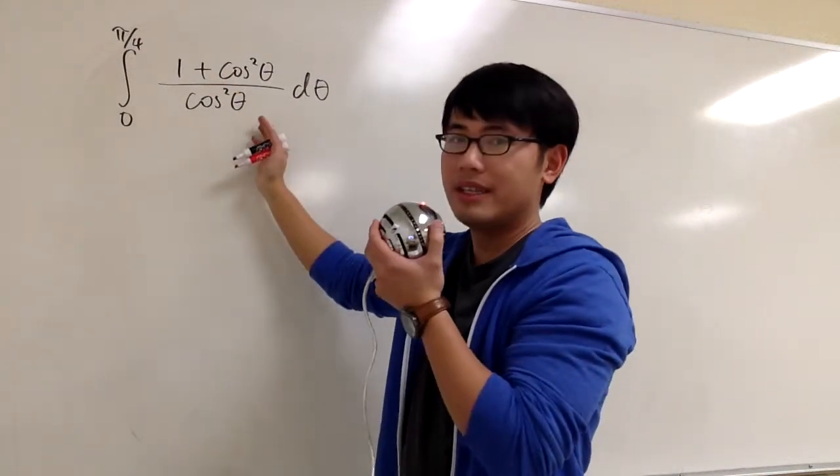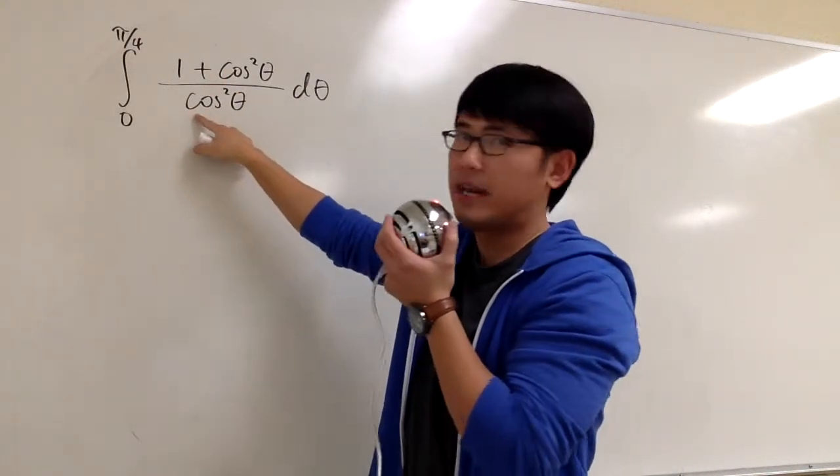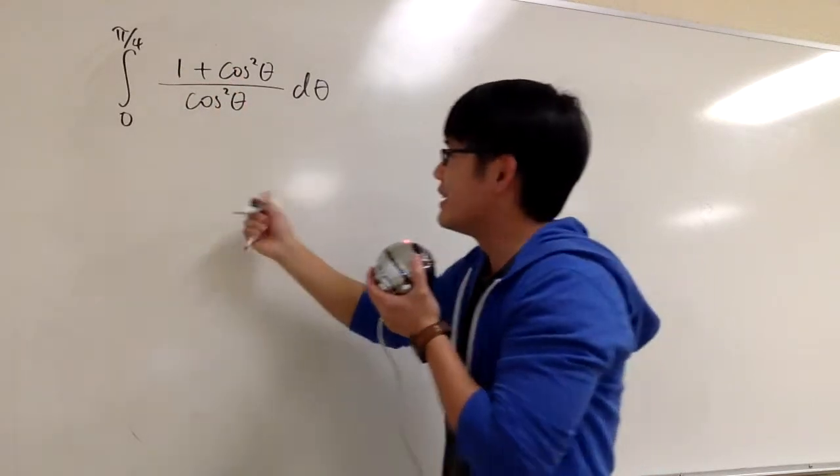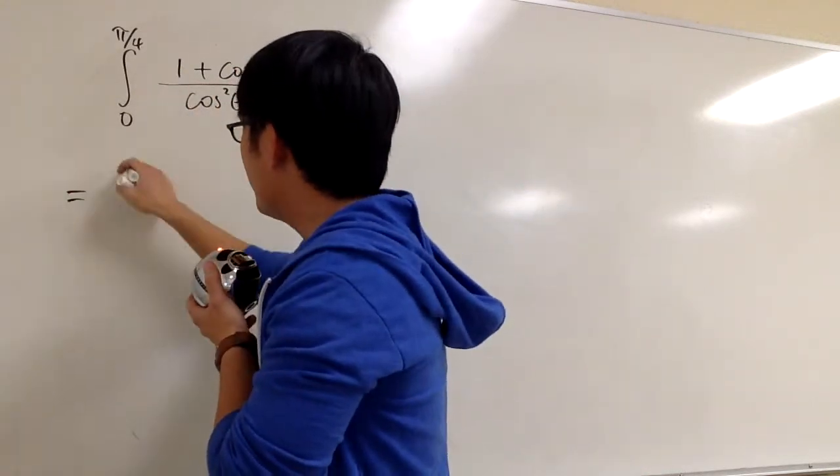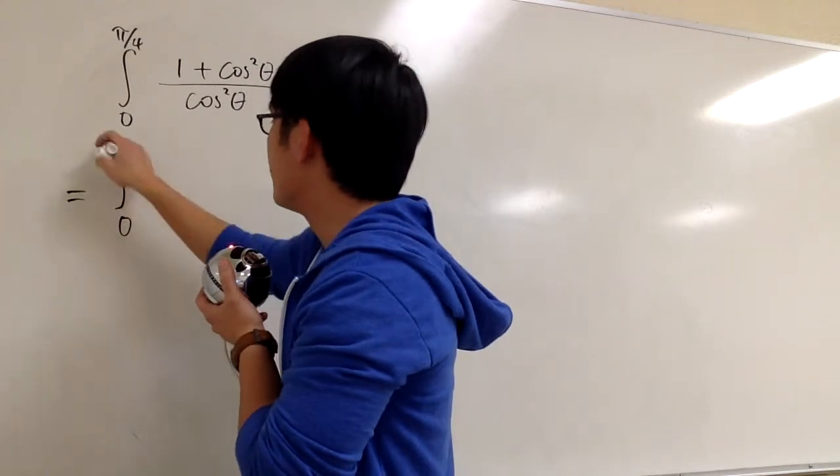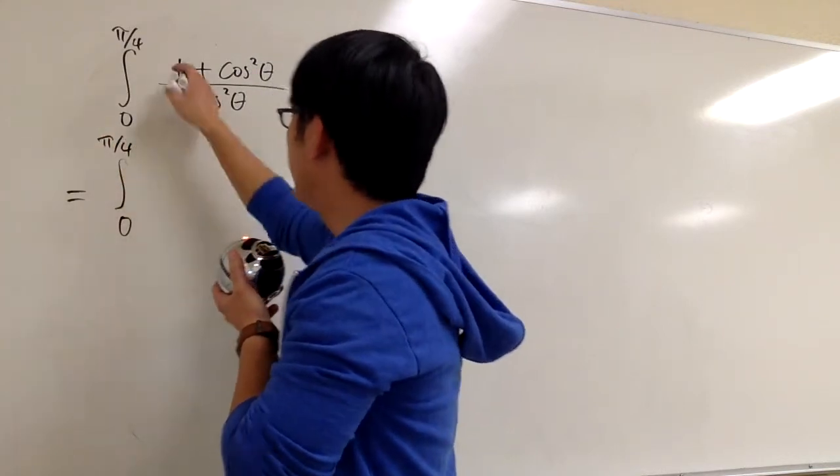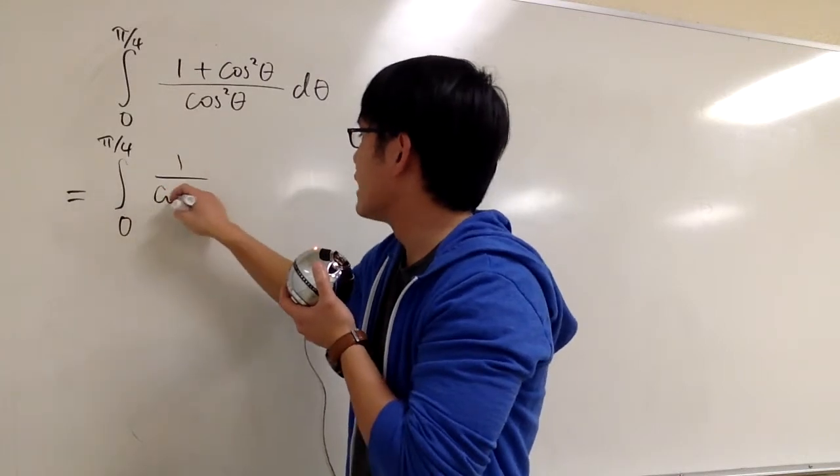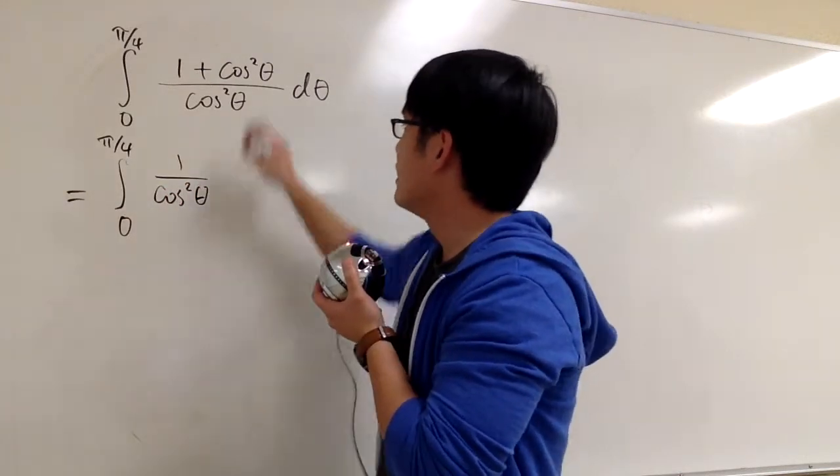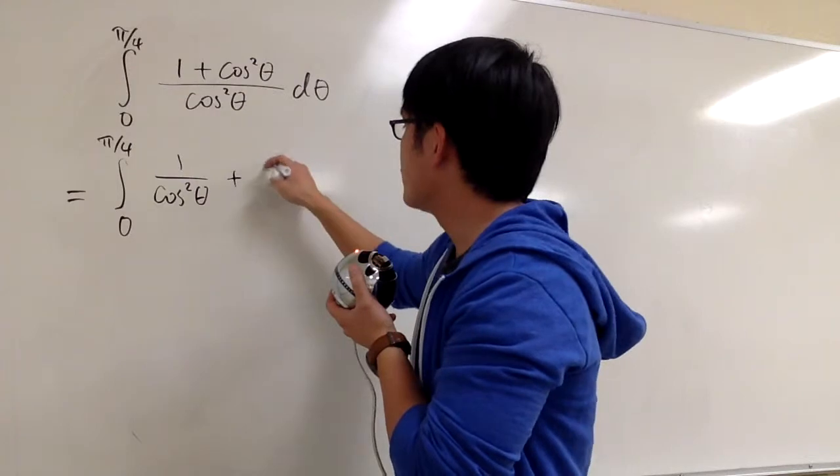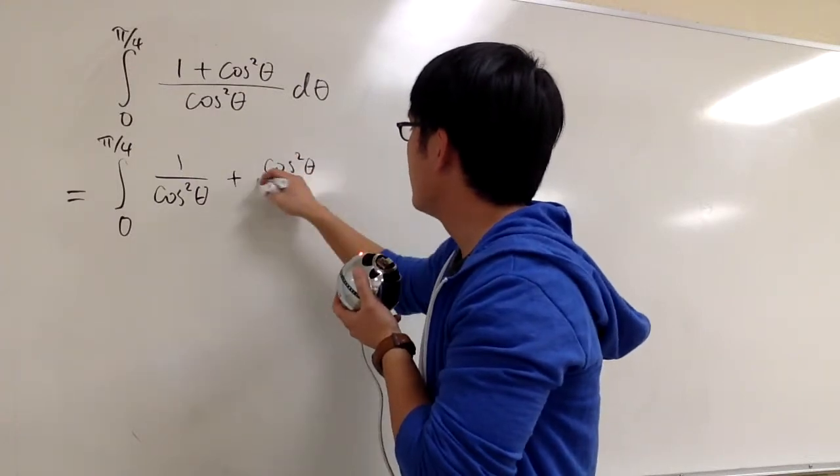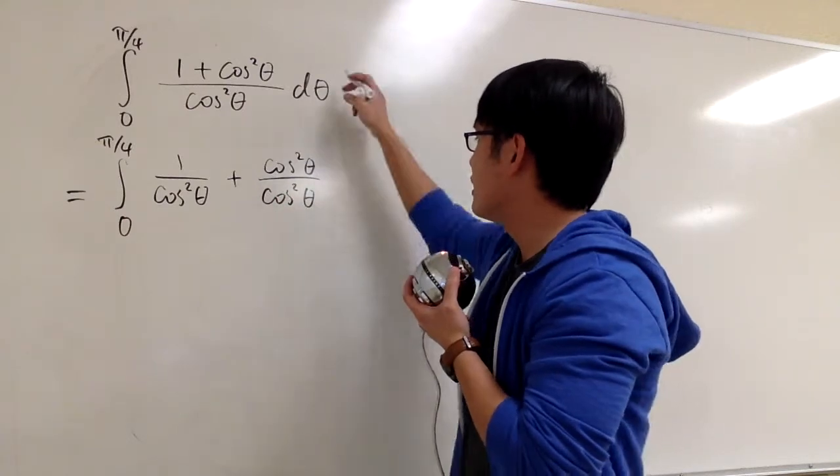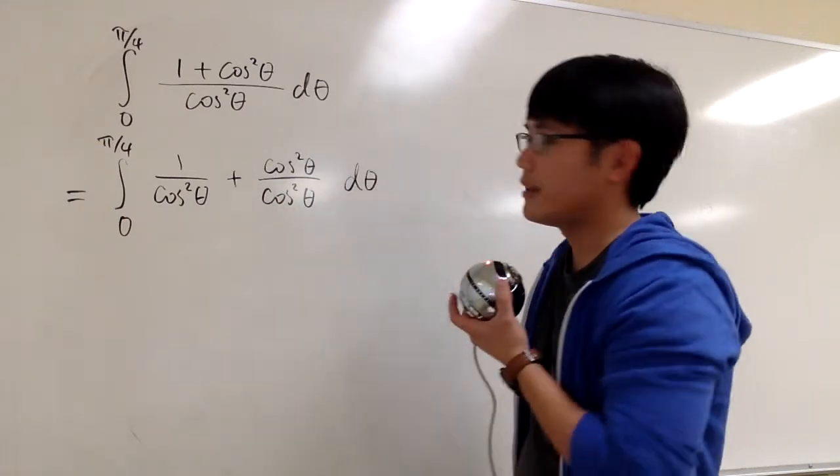How can we do this? Luckily, we only have one thing on the denominator, and we can just try to split fractions to see what we can do. So right here we have integral from 0 to pi over 4, and then let me just split fractions. So we have 1 over cosine squared theta, and then plus the second fraction will be cosine squared theta over the same denominator, which is cosine squared theta, and we are still talking about d theta.